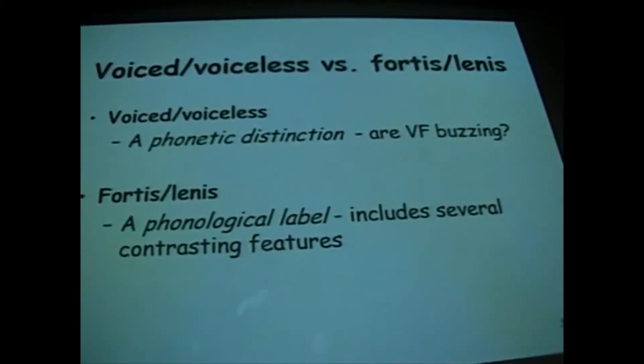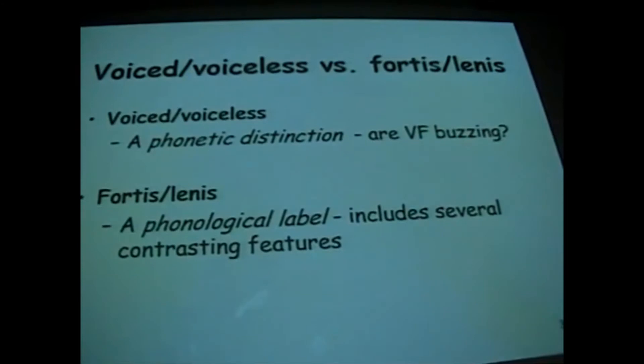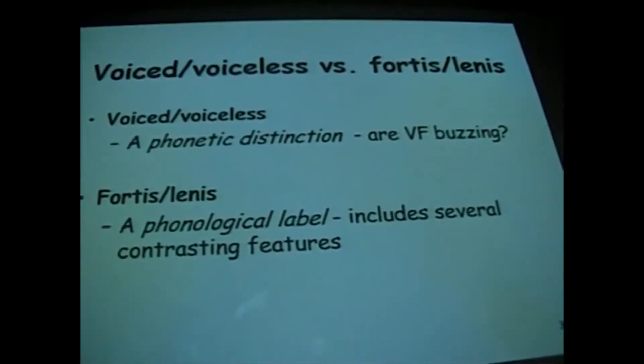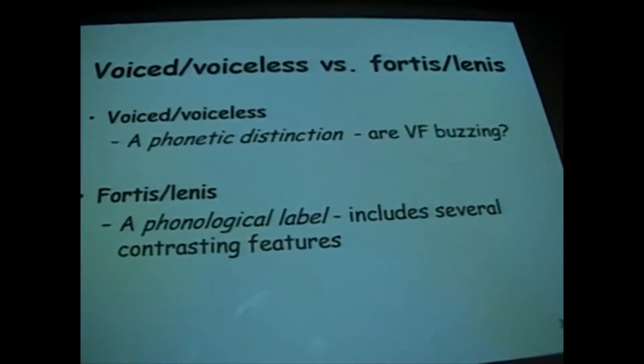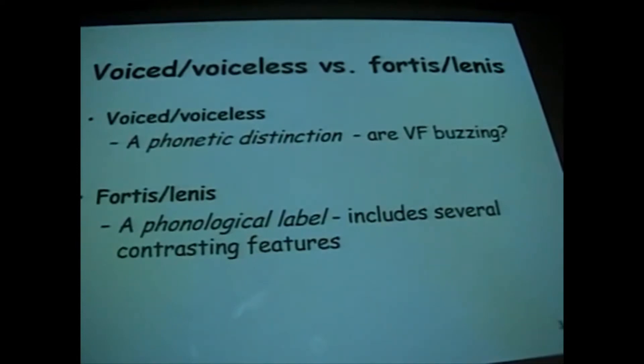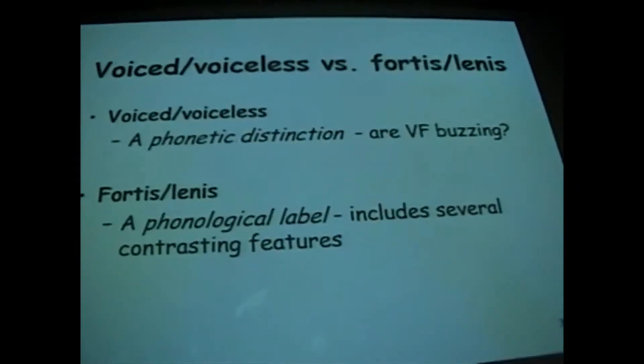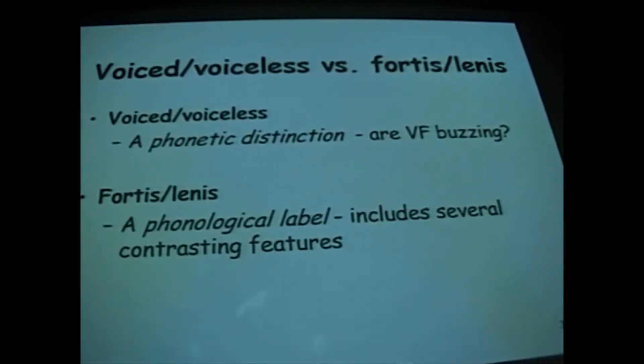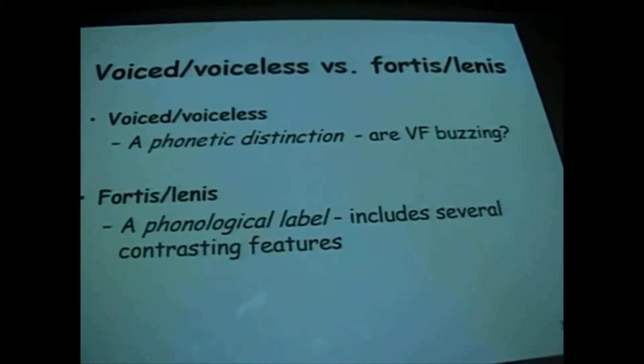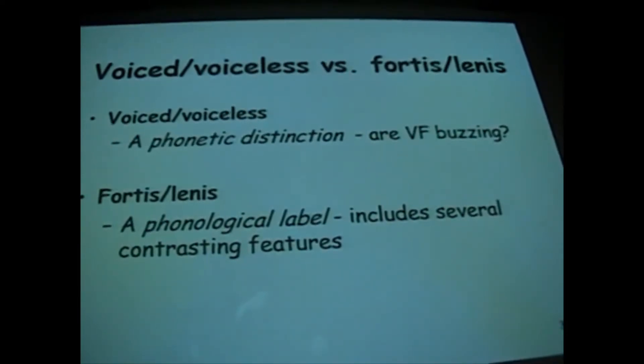You can see here that the articulation is in all respects stronger and more energetic for fortis. For lenis, the articulation is weaker. The articulation is voiceless for fortis. For lenis, the articulation has potential voice. The plosives P, T, K have a brief puff of air called aspiration. Initial plosives are unaspirated in the case of lenis. Fortis: vowels are shortened before a final fortis consonant. So a word like beat has a brief clipped vowel. We call that effect, John Wells' term has become used worldwide now, pre-fortis clipping.